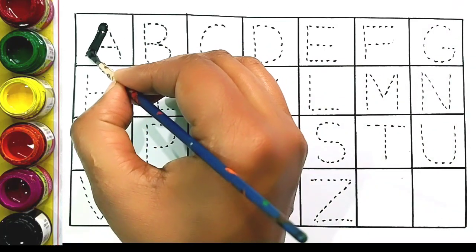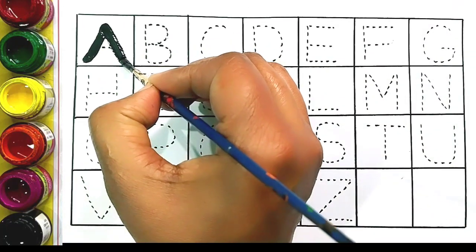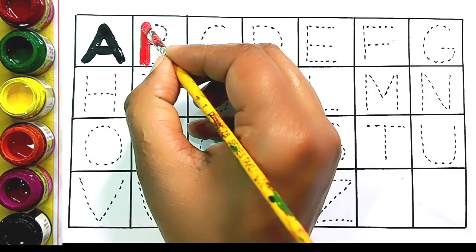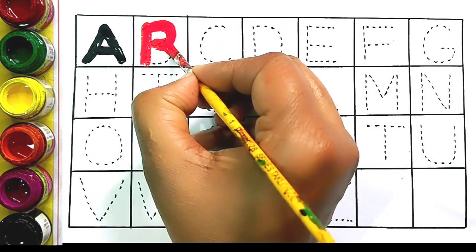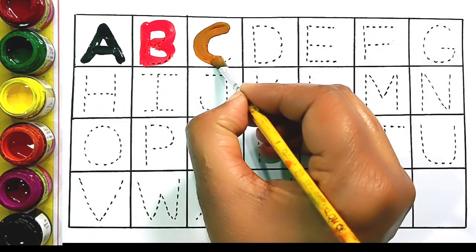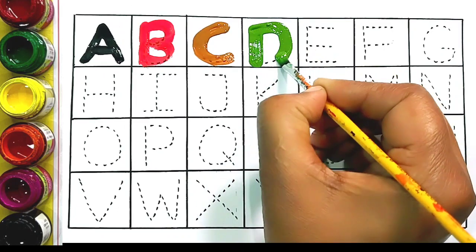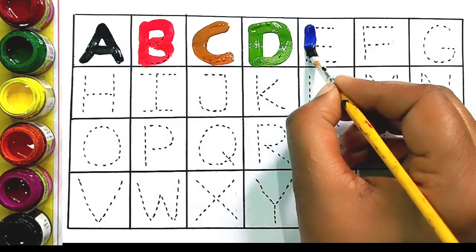A. A for apple. B. B for ball. C for cat. D for dog. E.